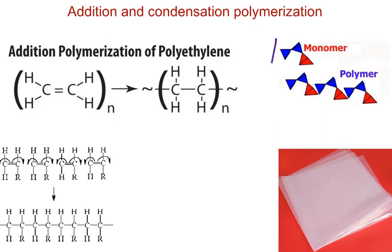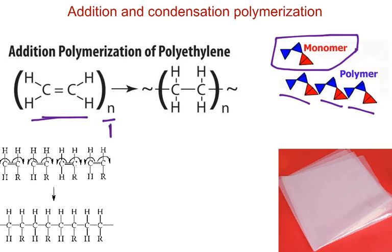You have monomers, which from experience we know are individual units, and they link together to make a very long chain molecule called a polymer. If you have a picture like this, this N represents a number of individual units of the monomer — for example, they could be a million, 100,000, 200,000, whatever. They eventually link together, and the resulting large molecule will be that number of units long.